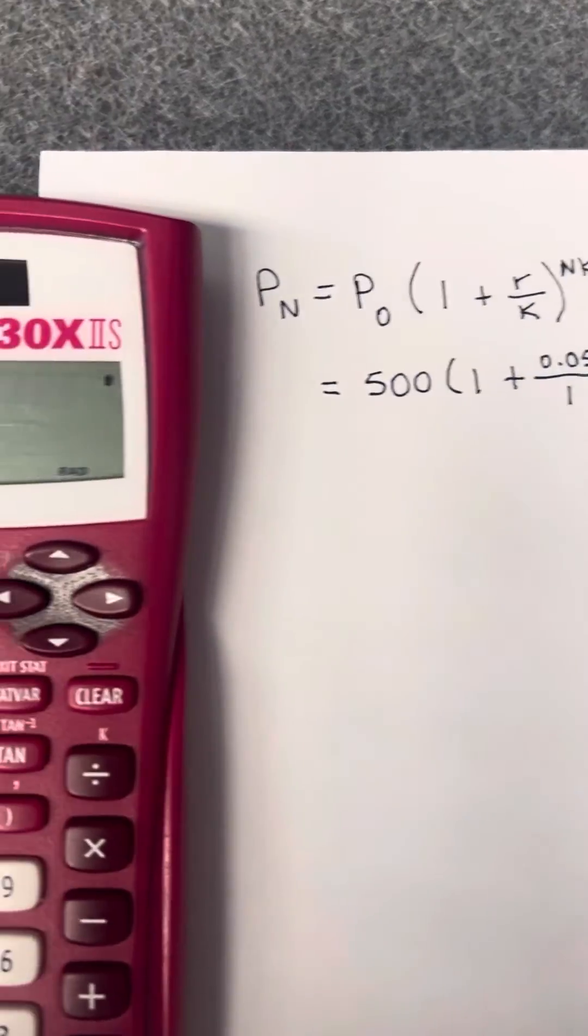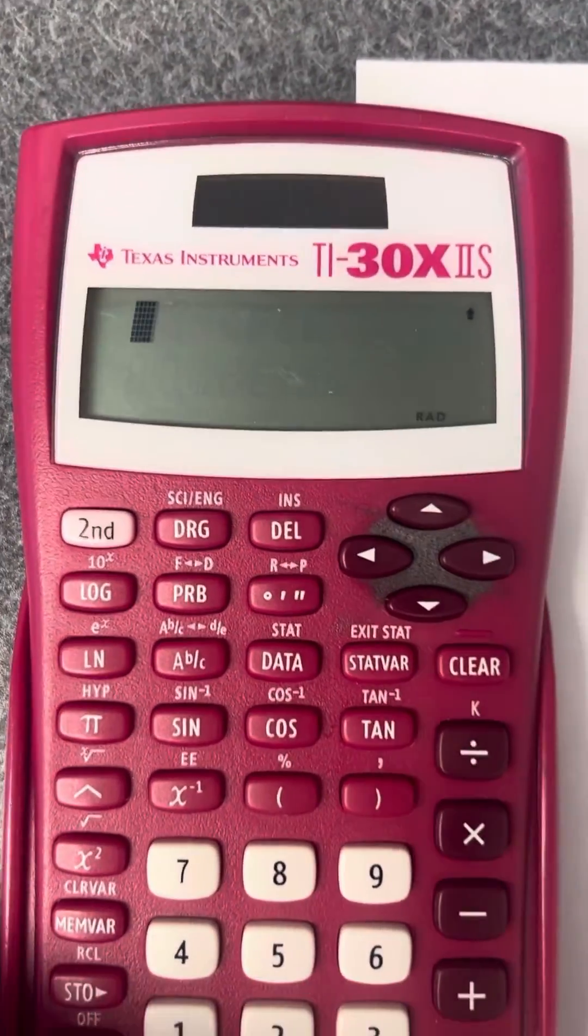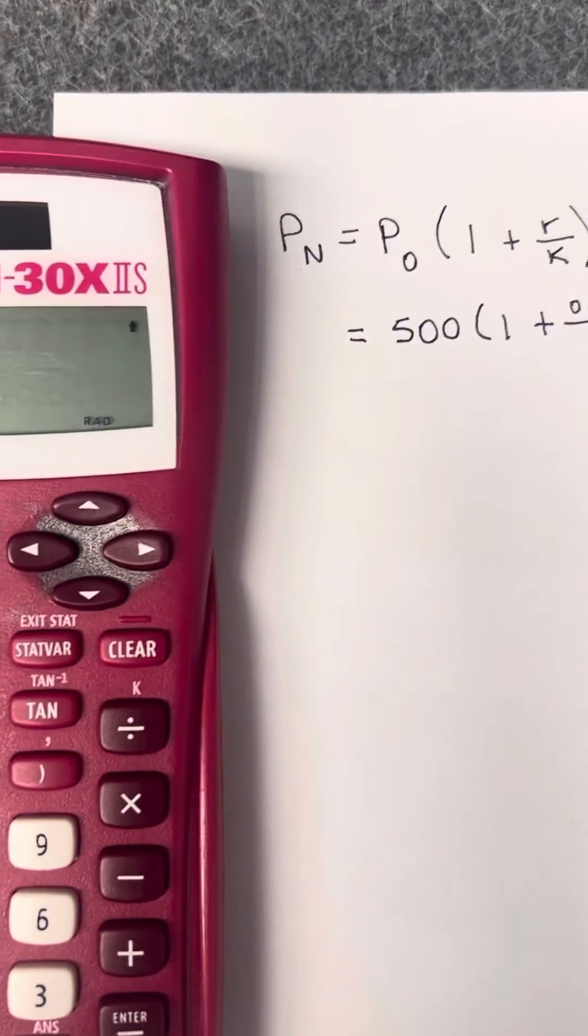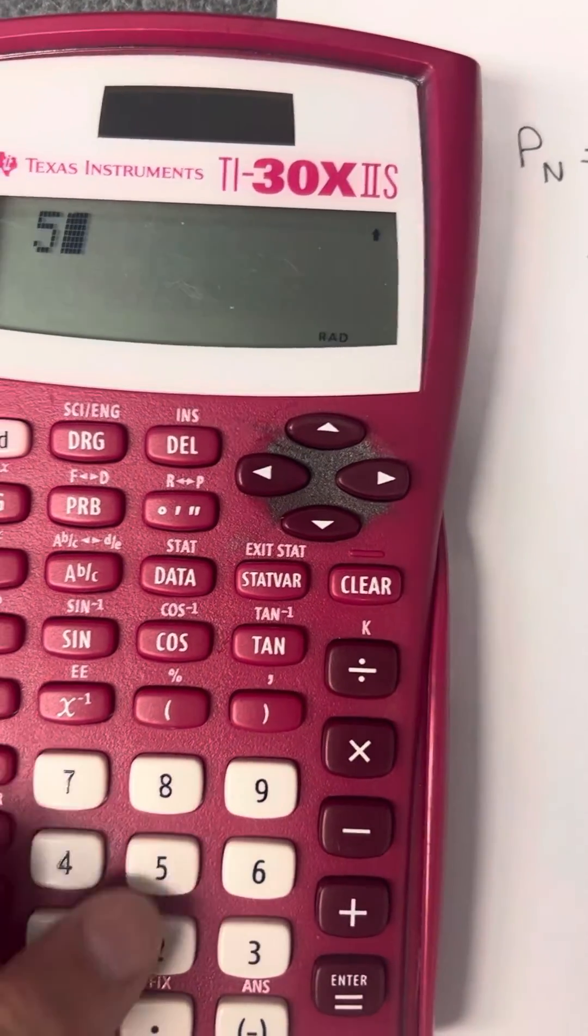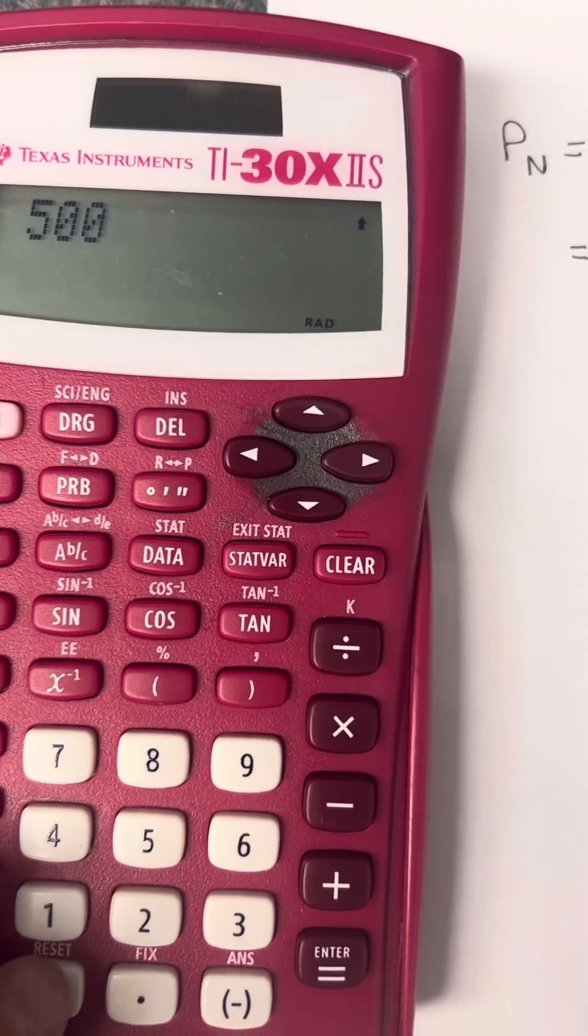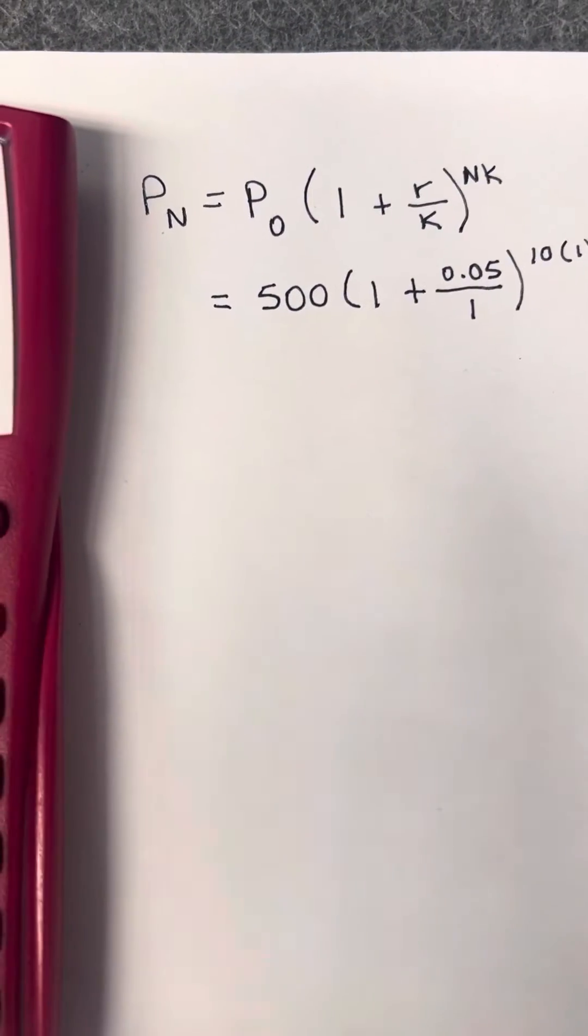To put that into the calculator, we just put it just like it looks. We have 500, and then times 1 plus the fraction there.